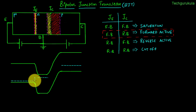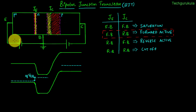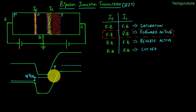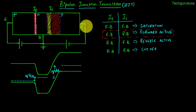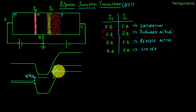The difference between the two Fermi energy levels at the emitter junction would be Q times V_EB, where V_EB is a positive value. The difference between the Fermi energy level at the collector side and the Fermi energy level at the base side would be equal to minus Q times V_CB. Since V_CB itself is negative, the result is positive.